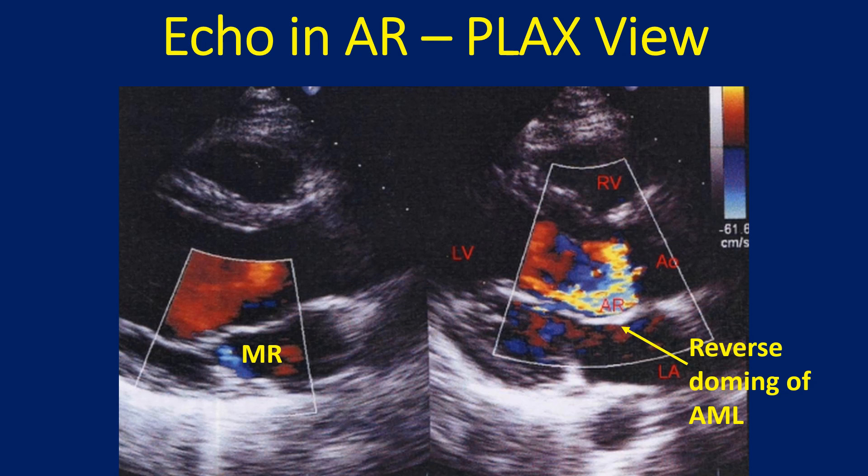Measurement of vena contracta, or the width of the proximal regurgitant jet for grading aortic regurgitation, becomes unreliable when the jet is eccentric. In central jets, a jet width less than 0.3 cm is highly specific for mild AR, while a width more than 0.6 cm is highly specific for severe AR.